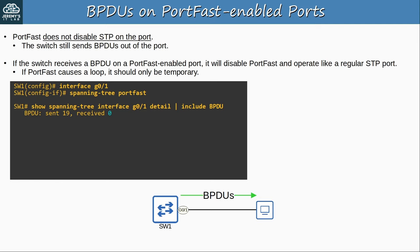You can change the interval with 'errdisable recovery interval'. Enabling errdisable recovery for the BPDU Guard cause with 'errdisable recovery cause bpduguard' activates it. After SW1's G0/1 port becomes error-disabled by BPDU Guard again, you can see G0/1 in the output of 'show errdisable recovery' — in 290 seconds it will be re-enabled automatically. However, if the offending switch isn't removed, it will simply be disabled again after recovering. Make sure to fix the underlying issue before relying on automatic recovery.